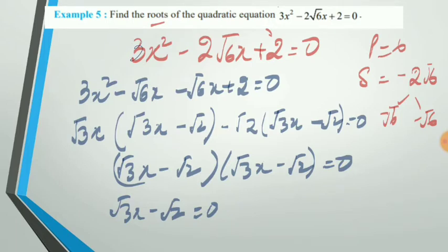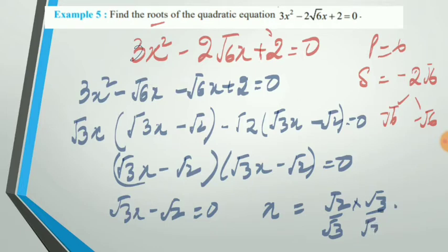Therefore x = √2/√3. We never leave the answer with an irrational denominator, so we rationalize it. The value of x comes out to be √6/3.